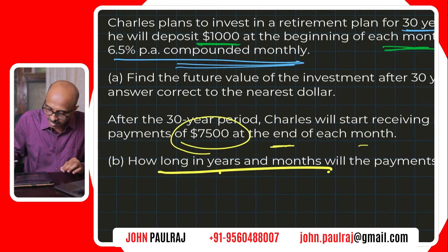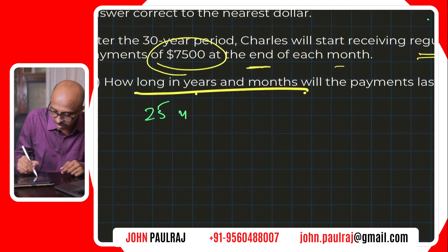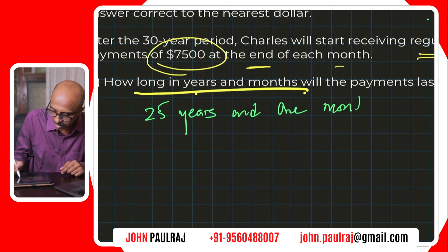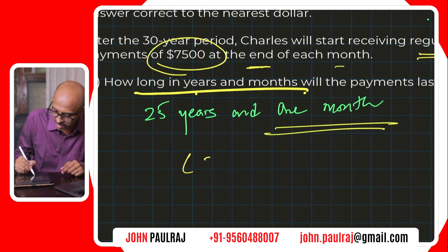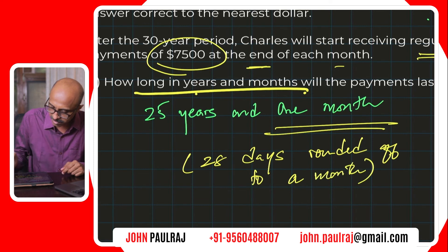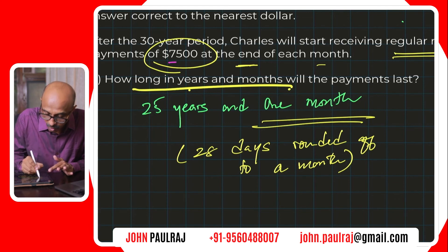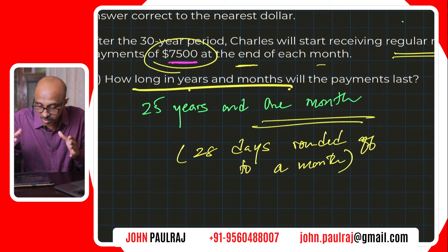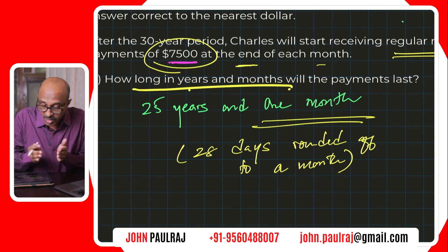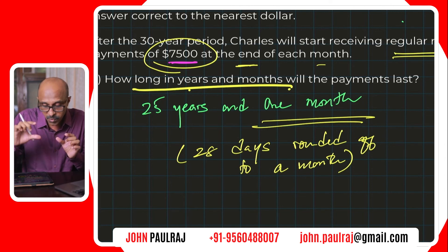28 days is almost a month. So we can say it is 25 years and one month. That is how long Charles will continue to receive those monthly payments of $7,500 from that investment — that $1,112,170. Every month receiving $7,500 at that rate, it'll last for 25 years and one month.